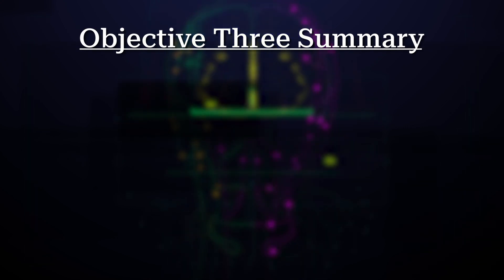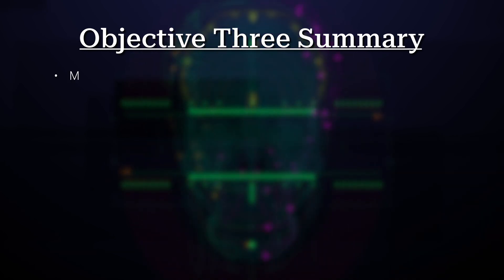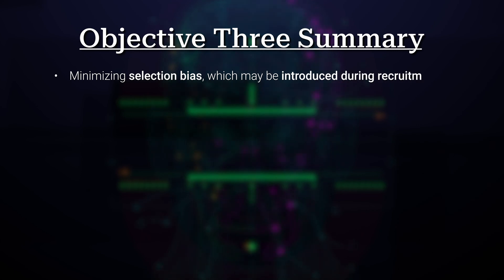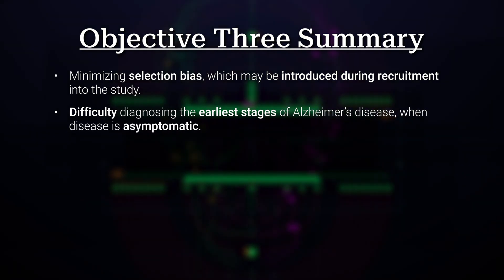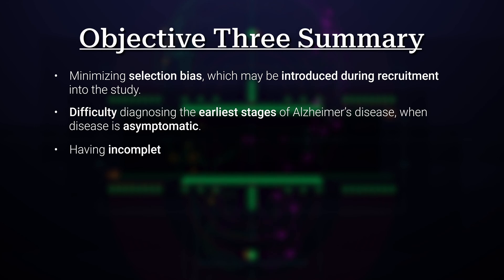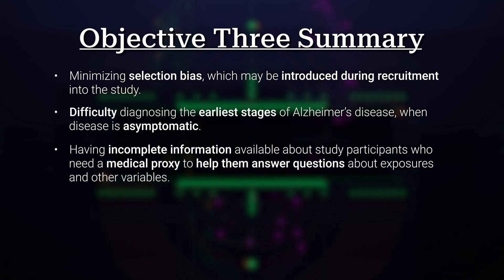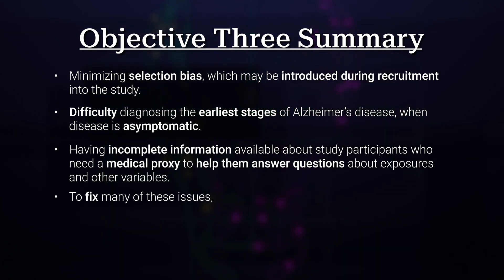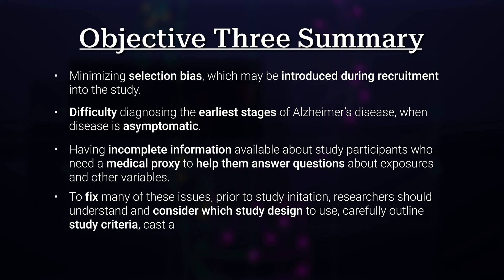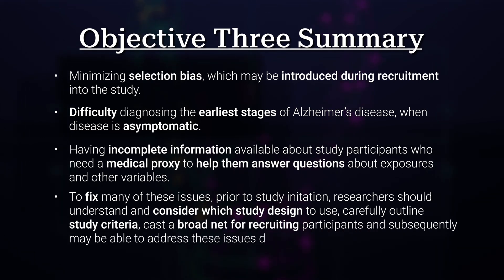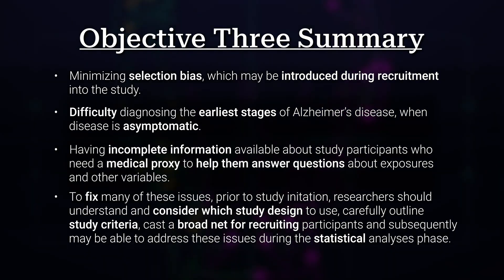In summary, challenges in collecting and using data in Alzheimer's disease studies include minimizing selection bias introduced during recruitment, difficulty diagnosing the earliest stages when disease is asymptomatic, and having incomplete information available for participants who need a medical proxy. To address these issues, prior to study initiation researchers should understand which study design to use, carefully outline study criteria, cast a broad net for recruiting participants, and consider addressing remaining issues during the statistical analysis phase.